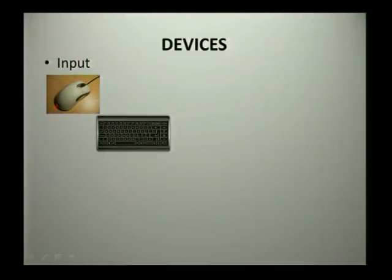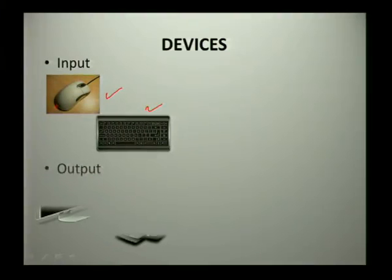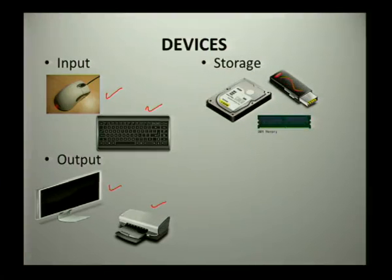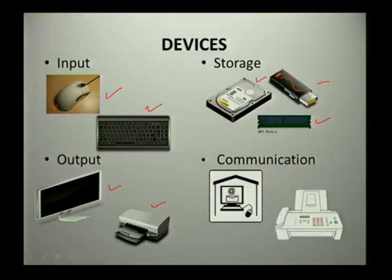Now let's look at the devices. First, you have input devices such as a mouse and a keyboard. Second, you have output devices such as a screen and a printer. Third, you have storage devices such as a hard drive, USB, and RAM.